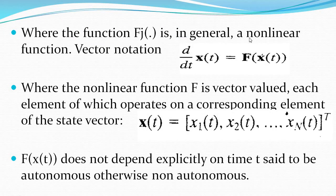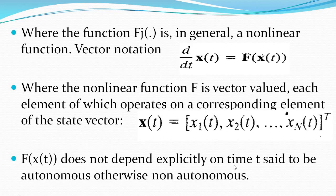The function fj is a general non-linear function. In vector notation, applying the first-order differential equation on the state vector yields f(x(t)), where f is a vector-valued non-linear function and each element operates on the corresponding element of the state vector. If f does not depend explicitly on time, the system is called autonomous. If it does depend explicitly on time, it is called non-autonomous.